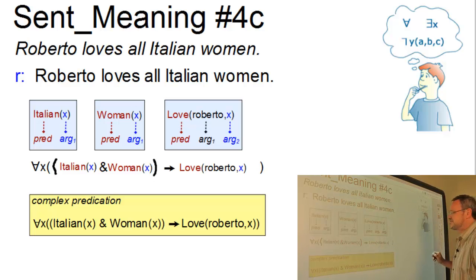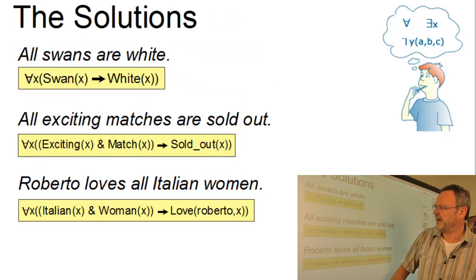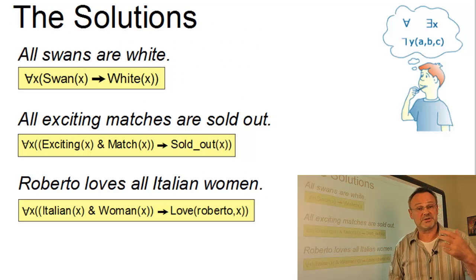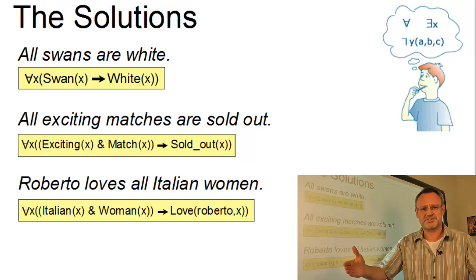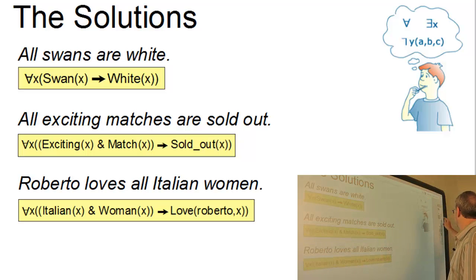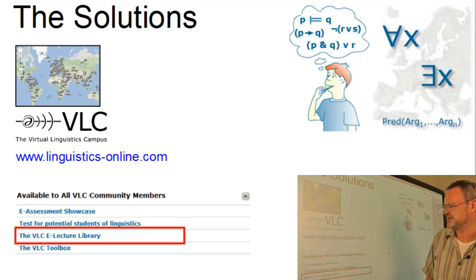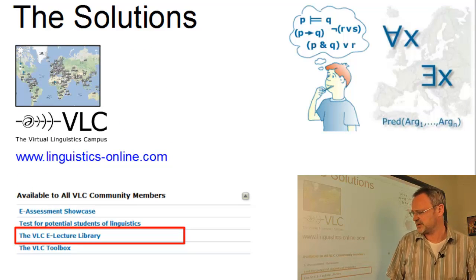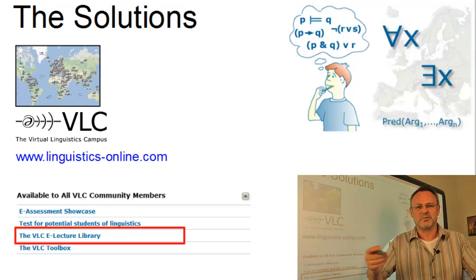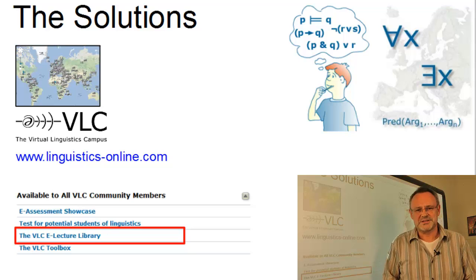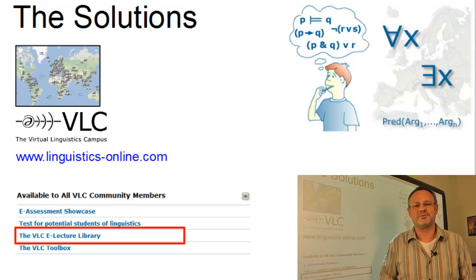Okay, that's it. Here are the solutions. And in the VLC eLecture library, you can download all these solutions in the PDF format. So, thanks and see you again. Well, this is what the eLecture library looks like on your personal VLC start site. So, a click on the VLC eLecture library URL will lead you to all the VLC support material. Thank you very much.